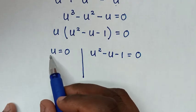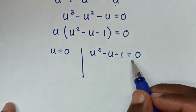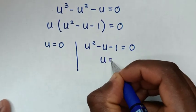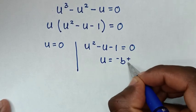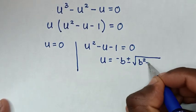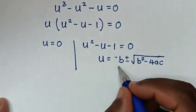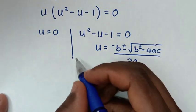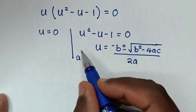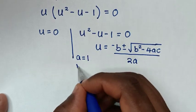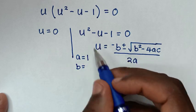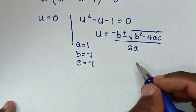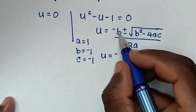From the quadratic equation we will find the value of u using the quadratic formula: u equals negative b plus or minus square root of b squared minus 4ac, over 2a. To identify the coefficients: a is the coefficient of u squared, which is 1; b is the coefficient of u, which is negative 1.